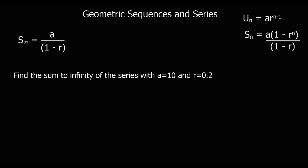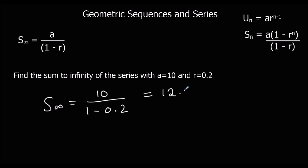Find the sum to infinity of a series when a = 10 and r = 0.2. The sum to infinity is a / (1 - r), which is 10 / (1 - 0.2). Typing that into the calculator — 10 divided by 0.8 — gives us 12.5. So the sum to infinity here is 12.5.